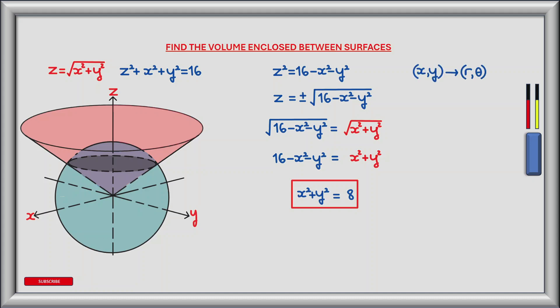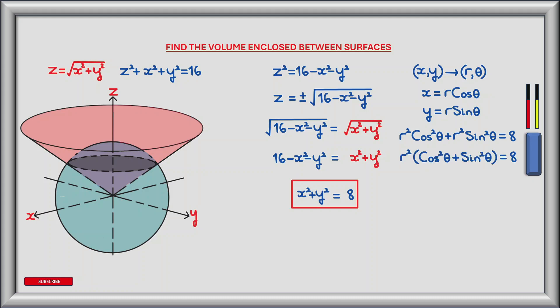To convert this to polar coordinates we let x equal r cos theta and y equal r sin theta. Substituting gives r squared cos squared theta plus r squared sin squared theta equals 8. Factoring out r squared and using the trig identity cos squared theta plus sin squared theta equals 1, we're left with r squared equals 8, and taking the positive square root gives r equals 2 multiplied by the square root of 2.